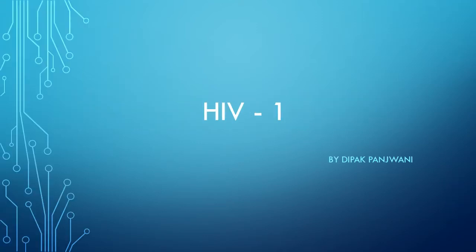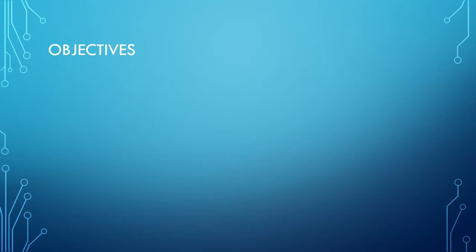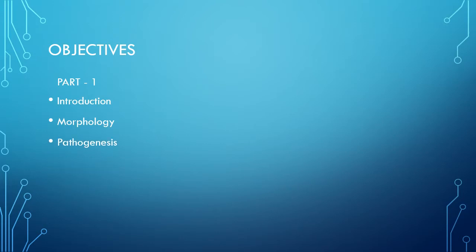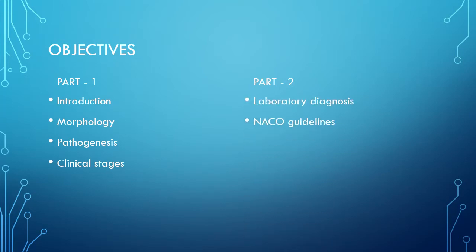This is a clinical case of HIV. Today we will discuss Part One of HIV. The objectives of Part One include: introduction, morphology, structure of the virus, genome, antigenic structure, serotypes, and pathogenesis including replication of the virus. There are four stages of HIV infection. In Part Two, the next lecture will cover lab diagnosis, NACO guidelines, the strategies of NACO, and the HIV situation in India.